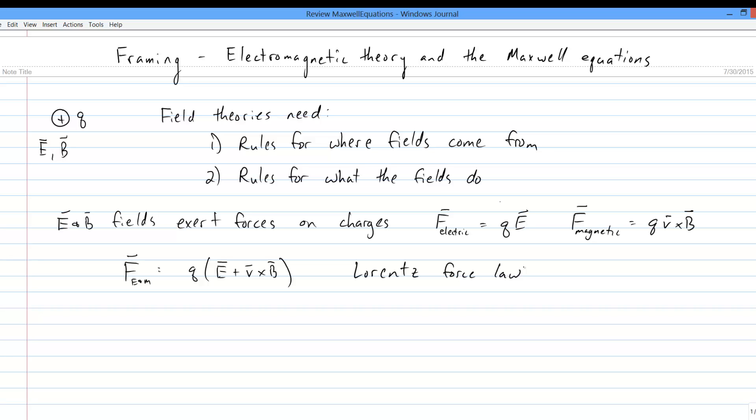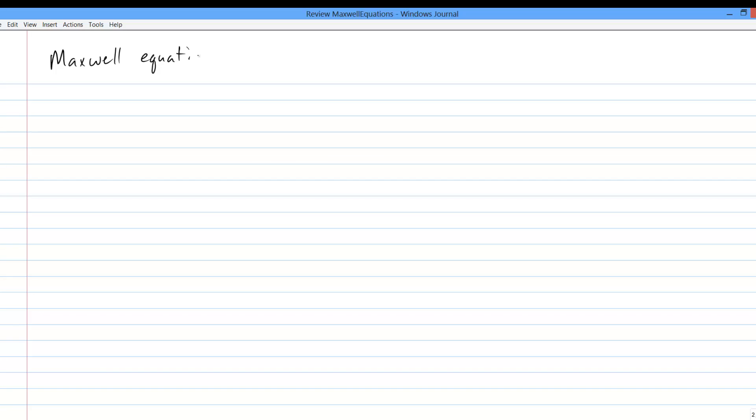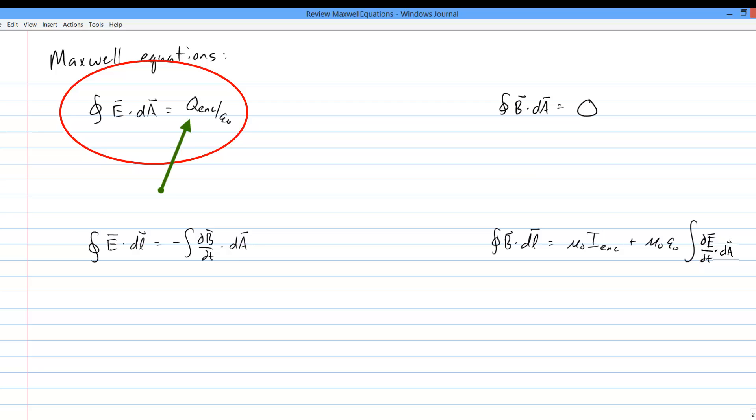There are four Maxwell equations, two each for E and B. In integral form, they look like so. The first is what we call Gauss's law, and it tells us that certain kinds of electric fields, those with divergence, come directly from charges.